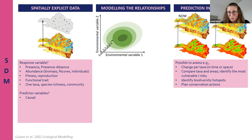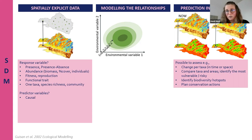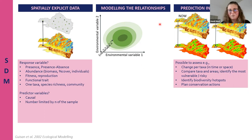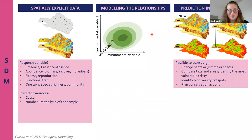Predictor variables should be causal. One can find spatial correlations among variables without any causality being present, so we rely heavily on ecological theory to identify causal and meaningful predictors. The number of environmental variables is limited not by mathematics but by the sample size of the study - if we have only a few locations with data, we can only use very few predictors.